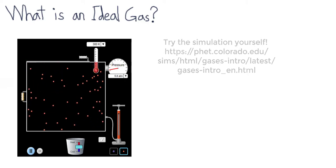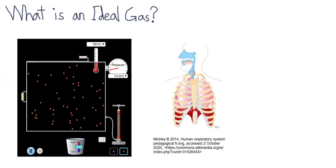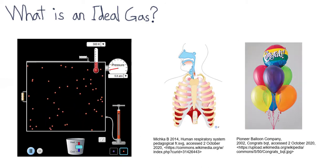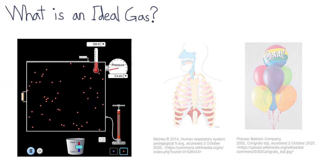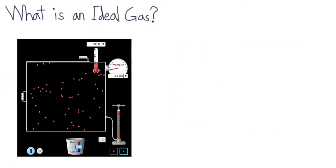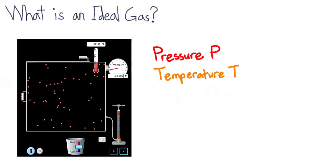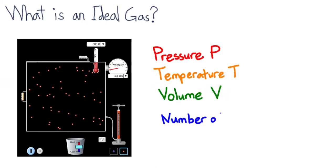Most real gases, such as the oxygen we breathe in and helium in balloons, can be modeled by randomly moving point particles. This allows us to quantify properties such as pressure, temperature, volume and number of moles. Once we can put a number to these properties, we can calculate and predict how they will behave.